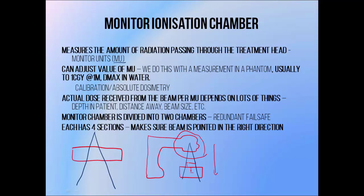In order to determine how much an MU is worth, we take a measurement inside a reference geometry. A popular choice is to do it 100 cm away from the radiation source at a depth of a few centimetres in water, which is regarded as equivalent to human tissue. We adjust the amount of radiation that comes out of the machine per monitor unit so that 100 monitor units deliver a dose of 1 grey — so 1 monitor unit is usually equal to 1 centigray. Setting this value is the process of beam calibration, or absolute dosimetry. We can adjust for any changes in conditions through a process known as relative dosimetry.